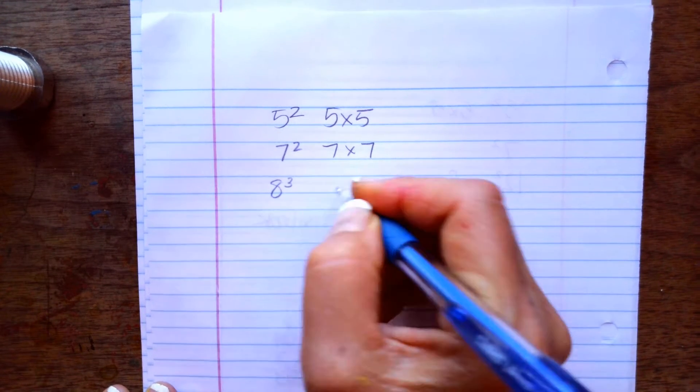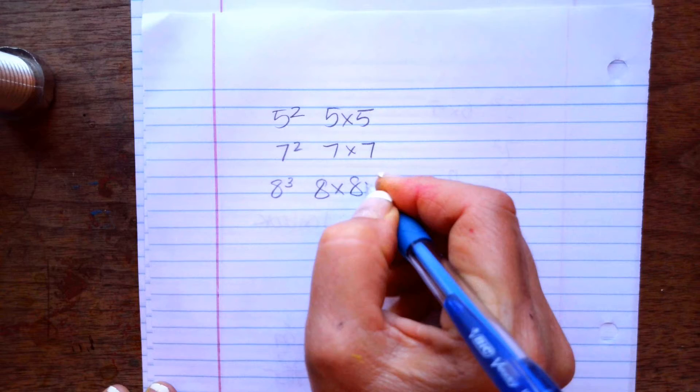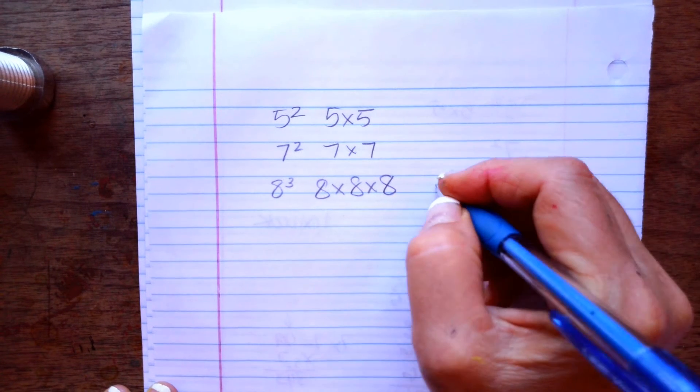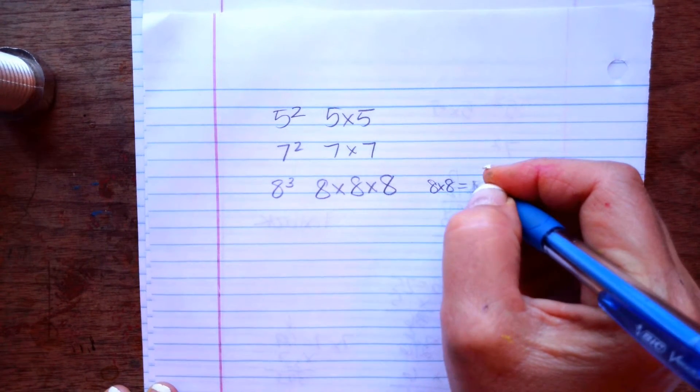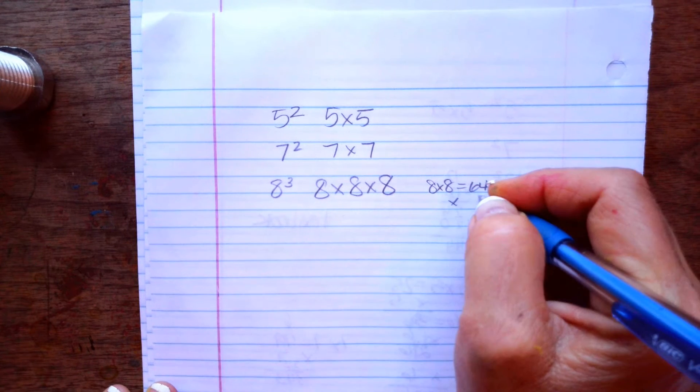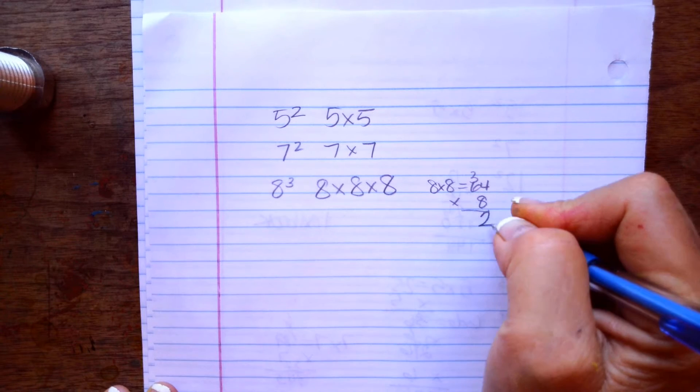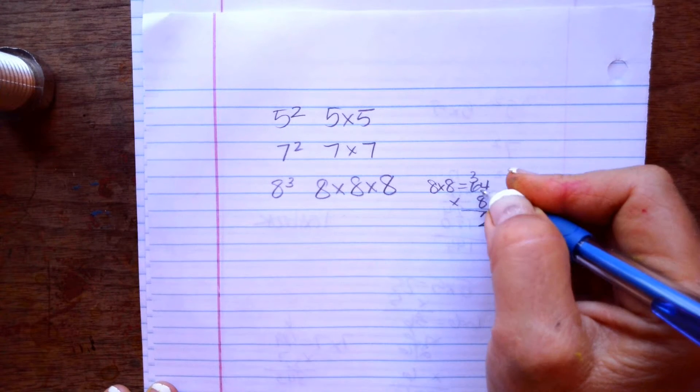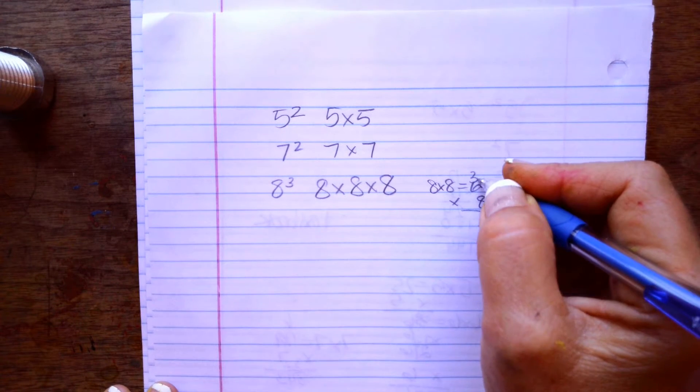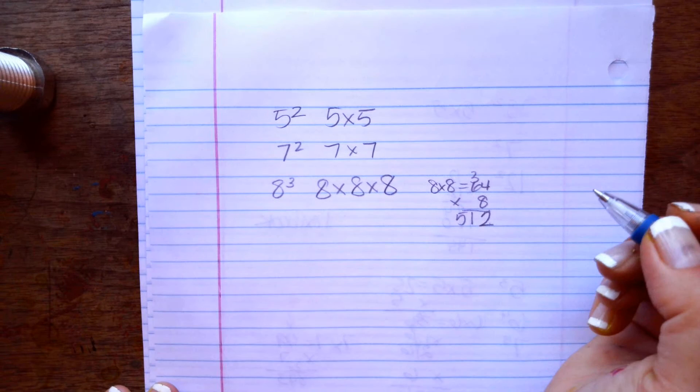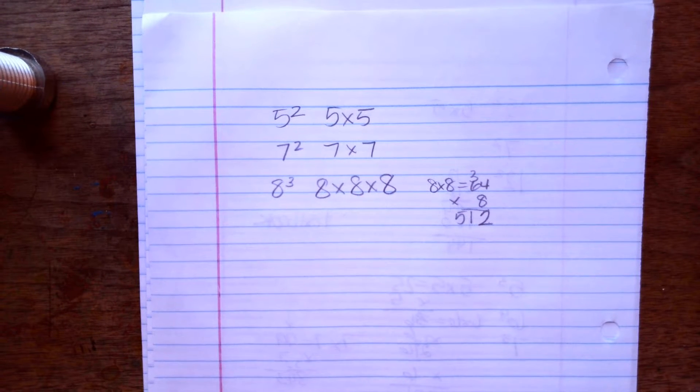8 to the third power means 8 times 8 times 8. So you're going to do 8 times 8 is 64 times another 8. So 8 times 4 is 32, you put the 3 up here, you put the 2 here. 6 times 8 is 48 plus 3 is 51. So you can see that the numbers get pretty big pretty quickly.